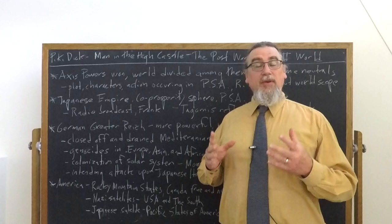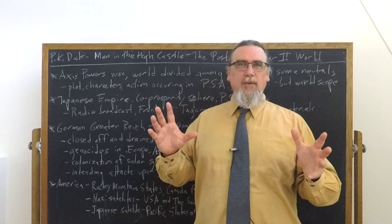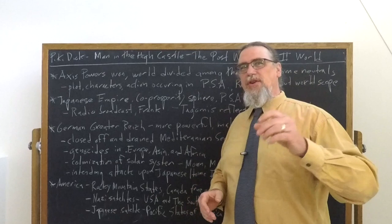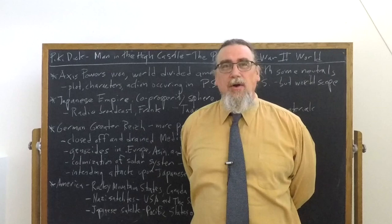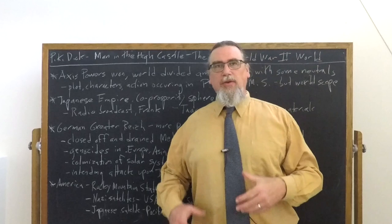Philip K. Dick's novel, The Man in the High Castle, is an alternate history in which the Axis powers — Nazi Germany, Imperial Japan, the Italian state, and a few other minor allies — won World War II against the British Empire, the French, and the Soviet Union. The United States stayed neutral and was later itself conquered in significant part, and so the entire world has been divided among these powers.